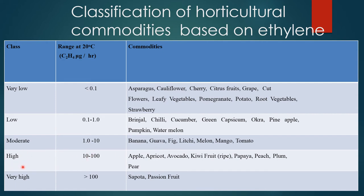In the case of high concentration, it ranges from 10 to 100 microgram per hour. Commodities include apple, apricot, avocado, kiwi fruit, papaya, peach and plum. Very high ranges from more than 100 microgram per hour, such as sapota and passion fruit. These are all the commodities in which the classes are differentiated.